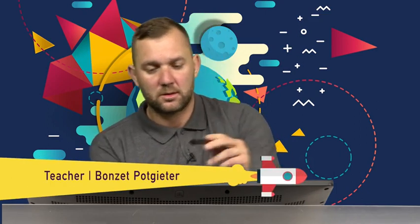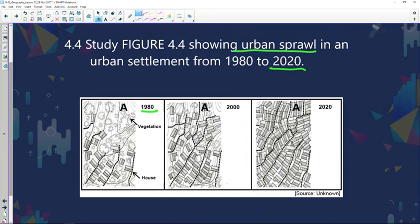Welcome back after the break. We're busy looking at question 4.4, discussing urban sprawl. If you look at 1980, you can see that the streets were planned. You can see the roads and the boundaries, and the houses being planned and built according to the streets, the gradient, and the roads, and obviously where the vegetation is.